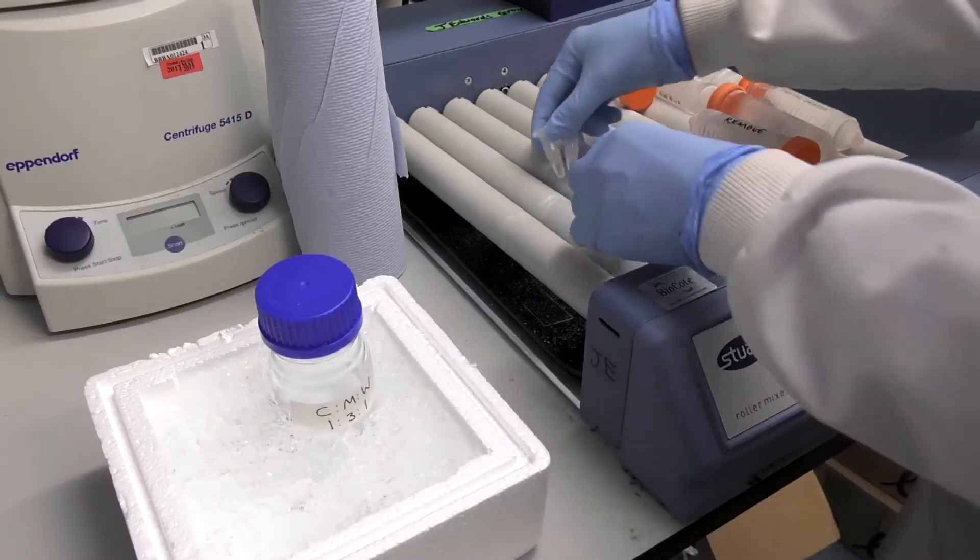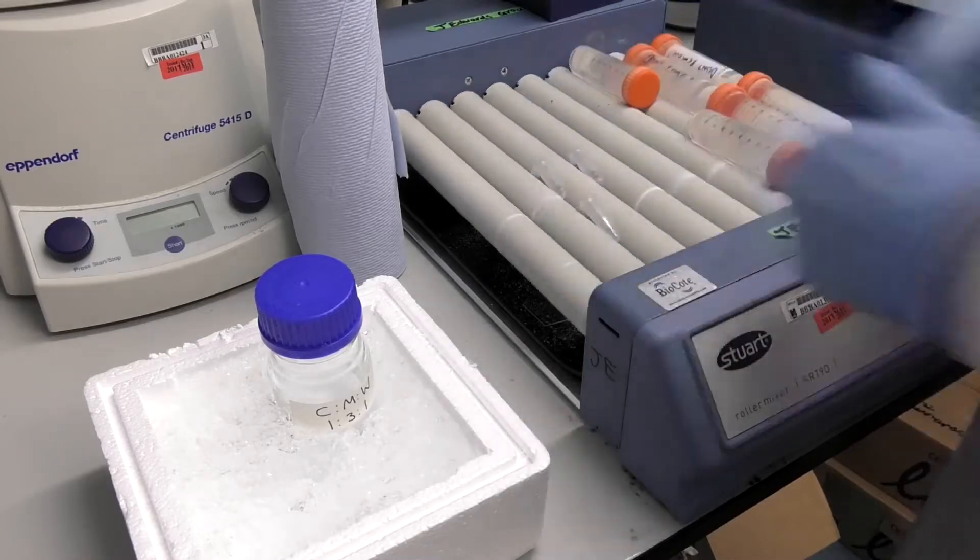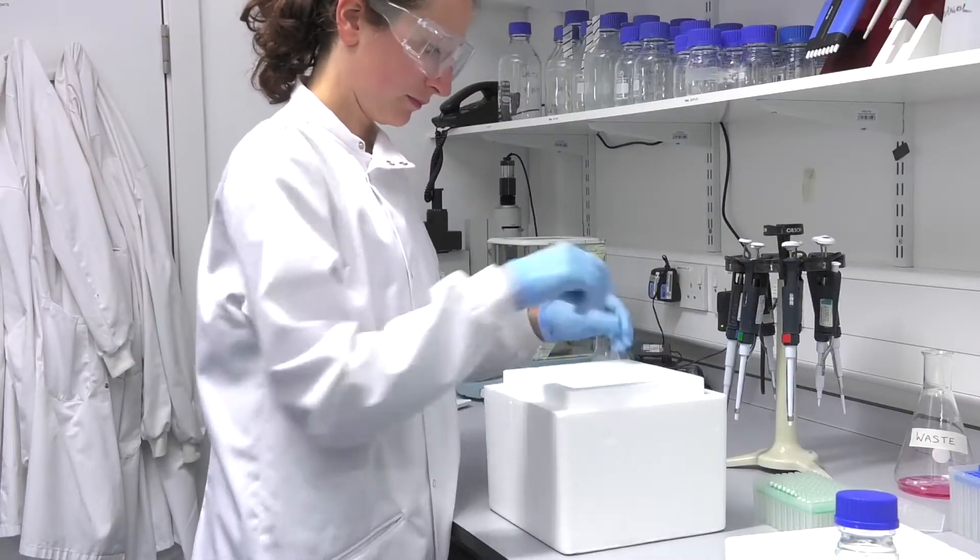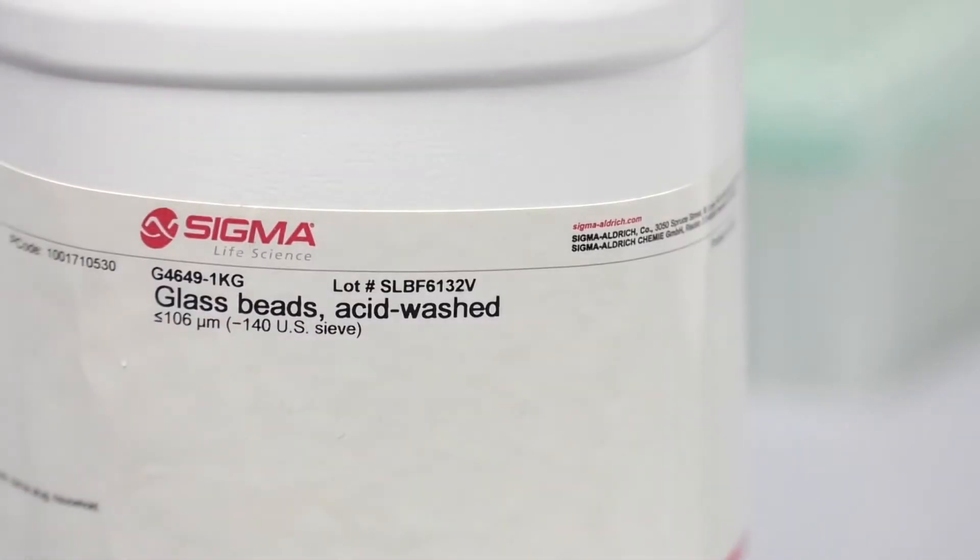Step 6. For many cells, you can leave the suspension on a shaker for 1 hour at 4 degrees C. For bacteria, you may need to perform freeze-thaw cycles, or use glass beads to lyse the cells. Yeast will also need glass bead lysis.